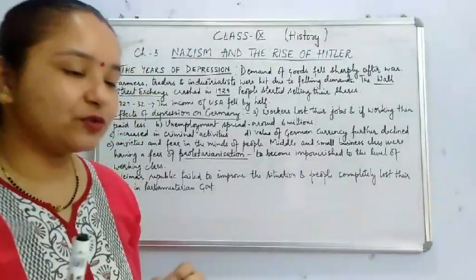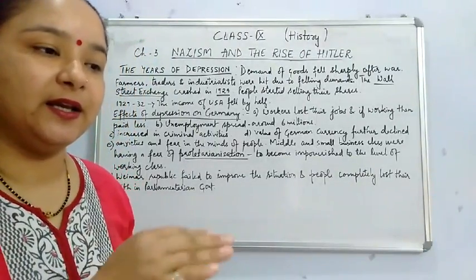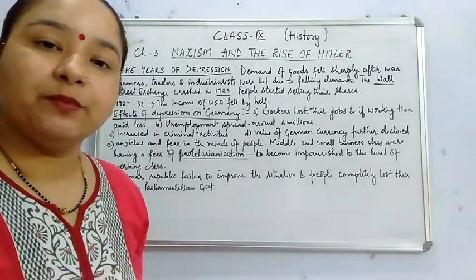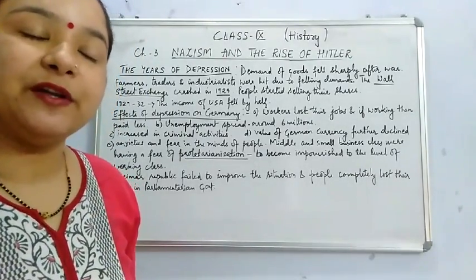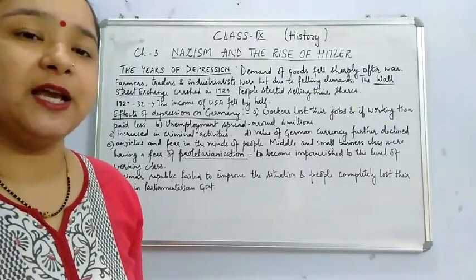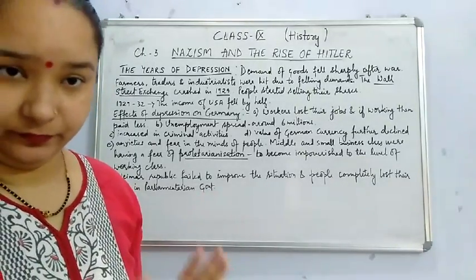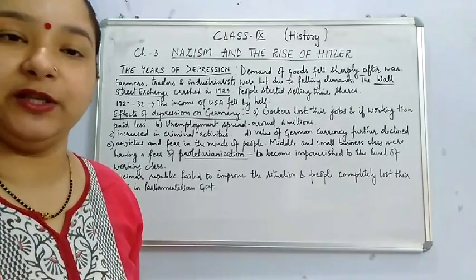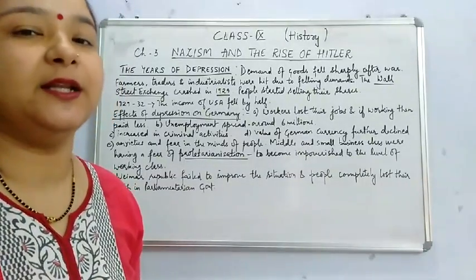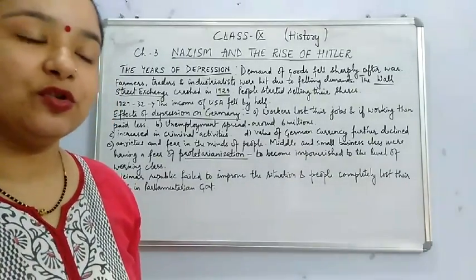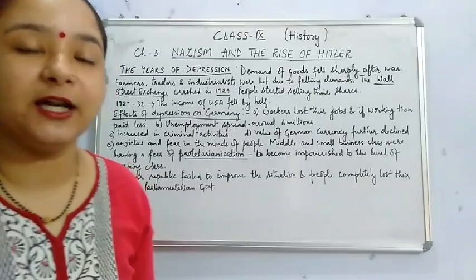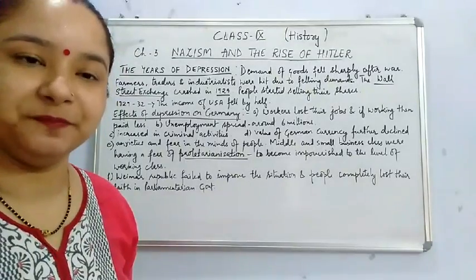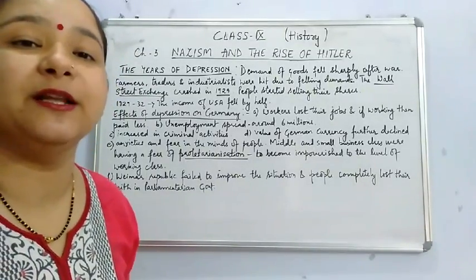But the USA didn't realize that the European countries had stopped buying. The USA continued producing at the same speed and manufactured goods in huge quantities. There came a point when USA's warehouses were filled with goods but there were no buyers. No other country was in a position to buy them. So ultimately, in the year 1929, there was a lockdown in the industries of USA because supply had far exceeded demand.